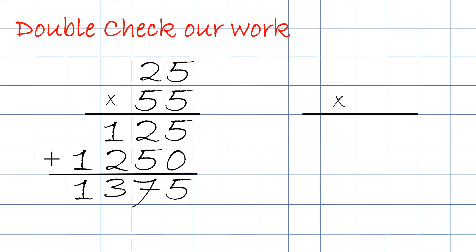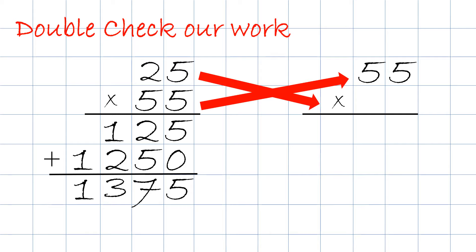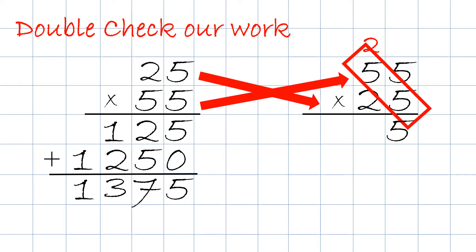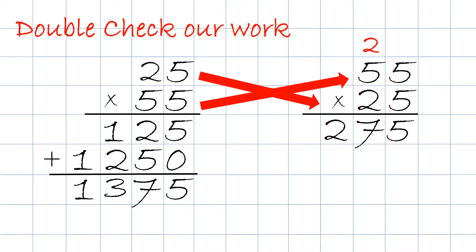Once again we flip-flop the numbers: put 55 on top and 25 on the bottom. We take 5 times 5 which is 25 — the 5, the second digit, we put right here and the 2 we carry on top. Next we take 5 times 5 which is 25, plus the little 2 on top, which makes 27, and we put 27 right up here.